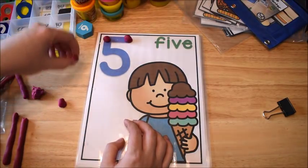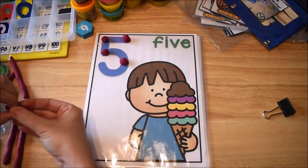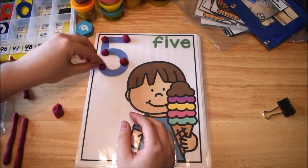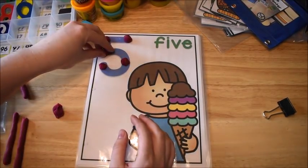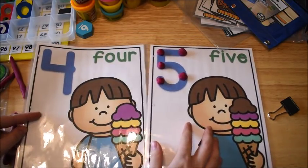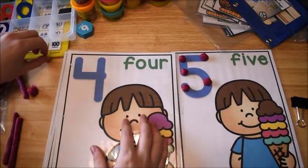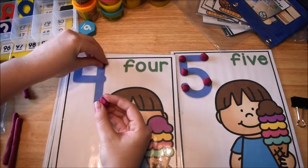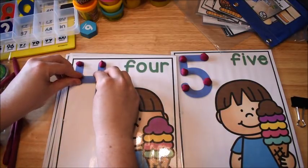But what we do is we use these mats and we take our Play-Doh and we put them on the touch points on the numbers. So here I have one, two, three, four, and the fifth touch point is right there. So we count out our five touch points to represent our number five.